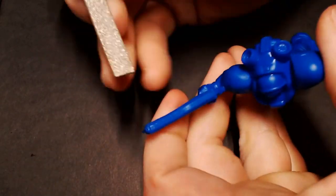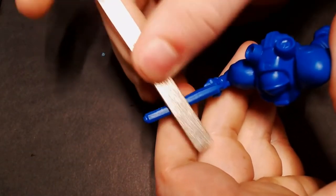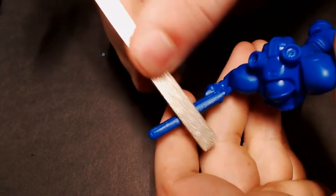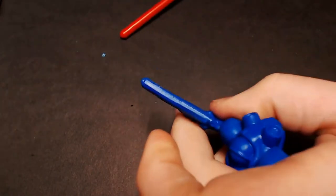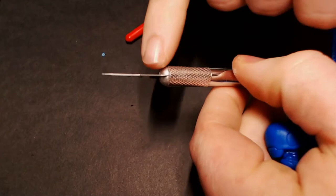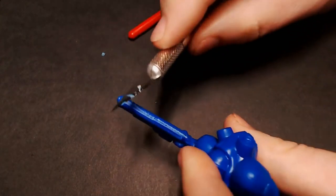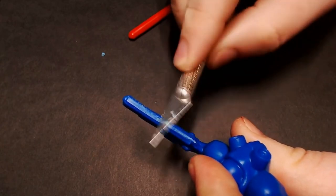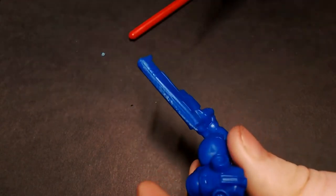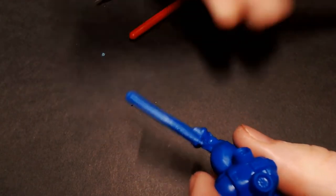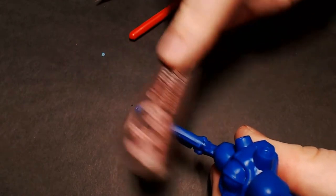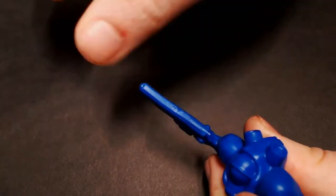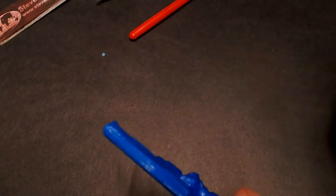So the first thing we're going to do with this guy is get rid of all these nasty mold lines, they're all over the place. So I'm taking our flat file here, and this is going to be a pretty rough grind, and just get all those mold lines kind of filed down, and then use the back side of our hobby knife to kind of scrape it down, get it a little smoother, and then to finish it off we're going to use our little sanding stick here that's a pretty fine grit, and just smooth all that out really nicely. And then go around the whole model and do that.